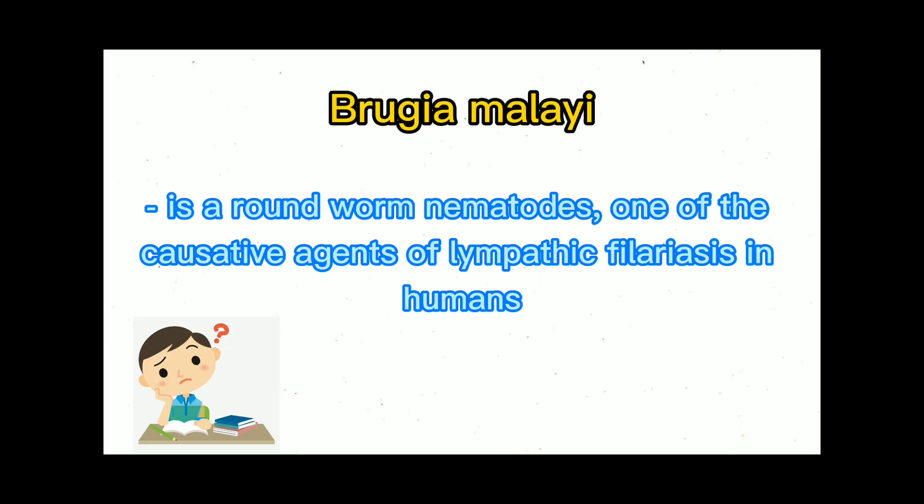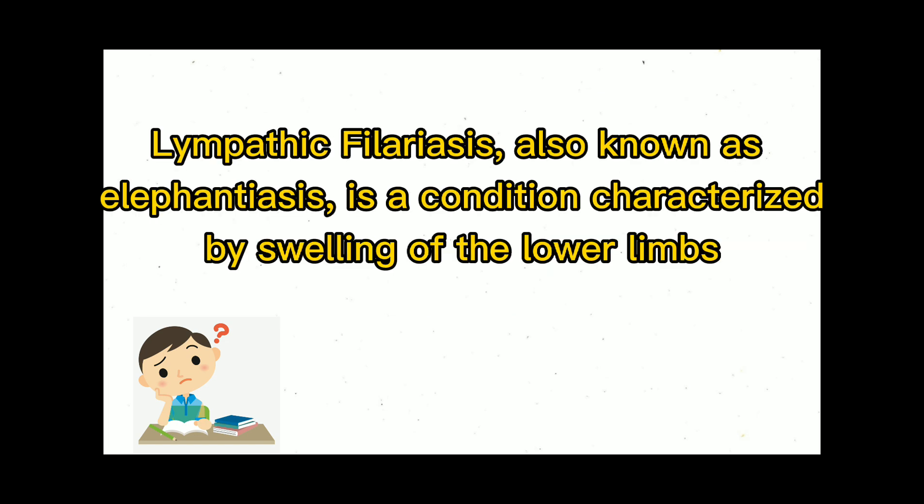Brugia malayi is a roundworm nematode and one of the causative agents of lymphatic filariasis in humans. Lymphatic filariasis, also known as elephantiasis, is a condition characterized by swelling of the lower limbs.